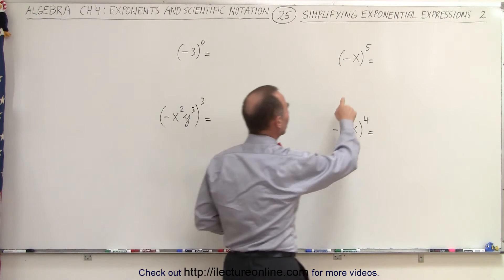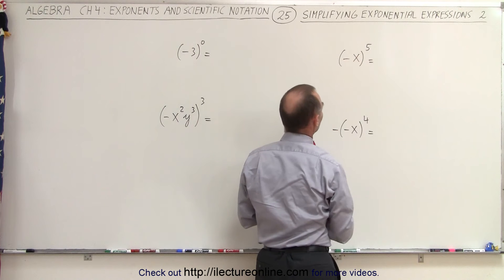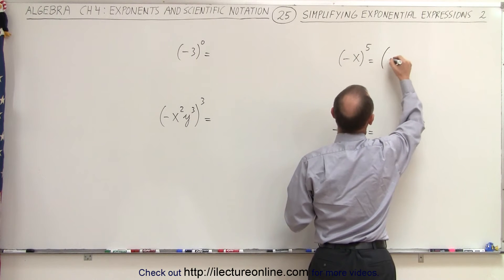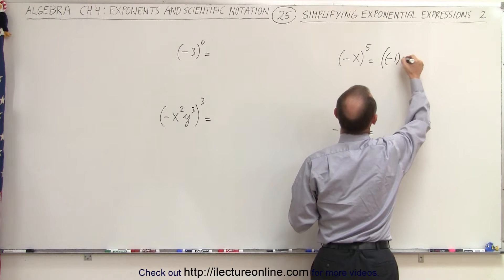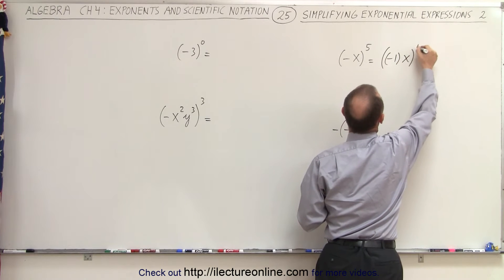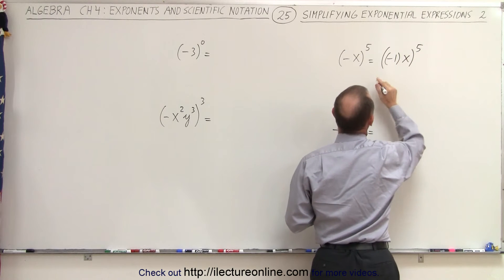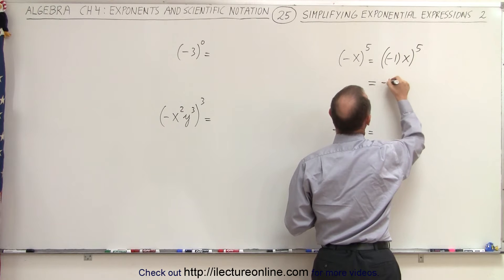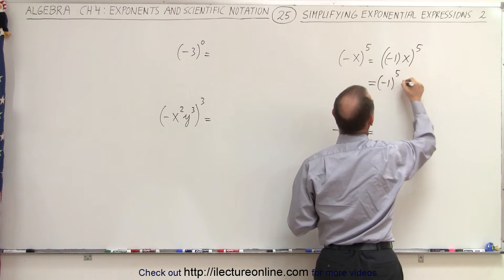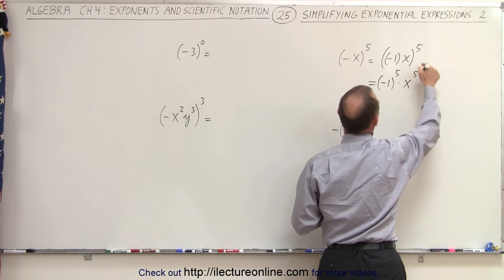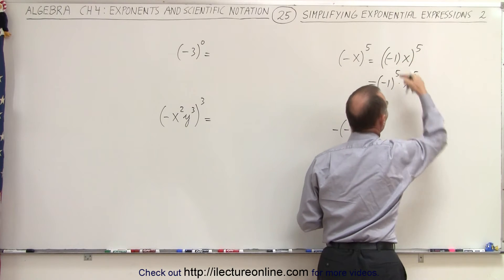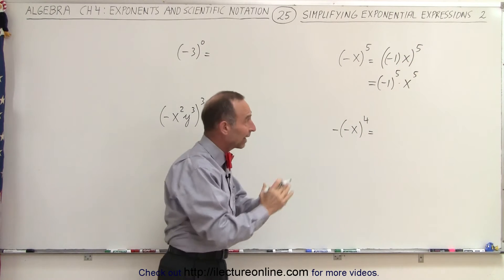So here we have the quantity minus x raised to the fifth power. You can rewrite this as follows. This is actually minus 1 times x raised to the fifth power. So that means that this is equal to minus 1 to the fifth power times x to the fifth power because the exponent distributes itself over every factor inside the parentheses.